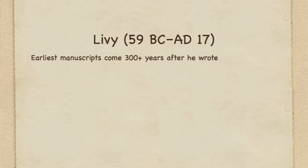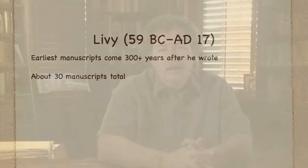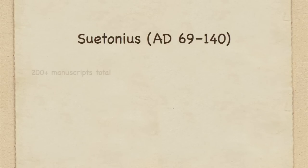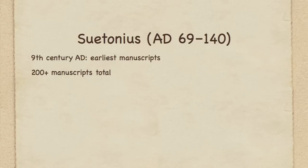Another ancient Roman historian was Tacitus. We are waiting 800 years before we see any copies of Tacitus's works, and the grand total that we have are three — three copies of Tacitus. Yet he's one of the great Roman historians to give us information on the history of Rome in and around the first century A.D. A third author, Suetonius: we have quite a bit of material from him — over 200 manuscripts. But again, like Tacitus, we are waiting 800 years before we get any copies of his writings.